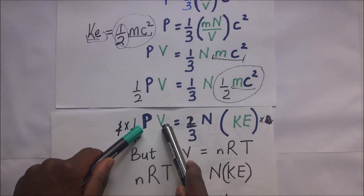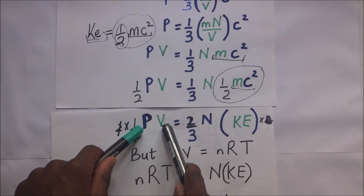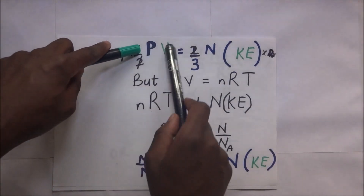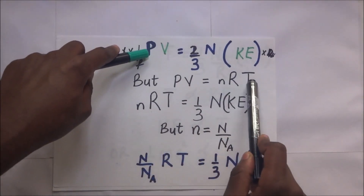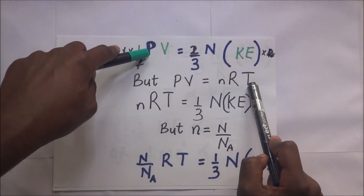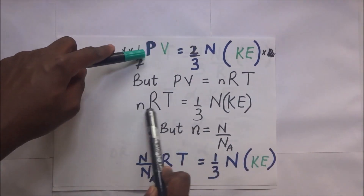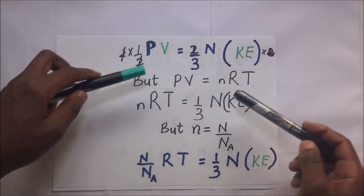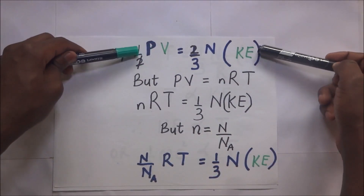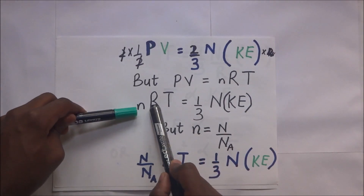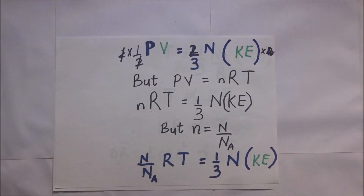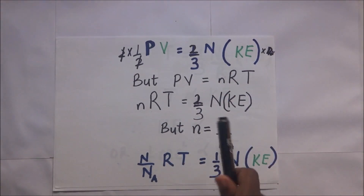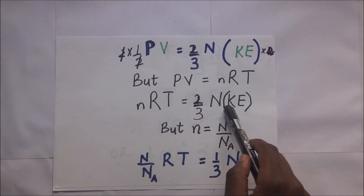We know that P times V is equal to NRT, which is the expression for an ideal gas. So where we have PV, we substitute it with N times R — the molar gas constant — times the absolute temperature T. That is how this step translates: it becomes N times capital R times T equals two-thirds times capital N times the kinetic energy.